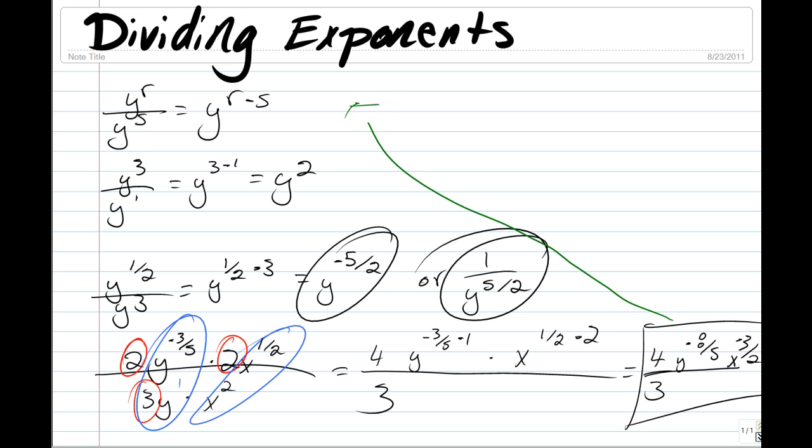However, you could also rewrite this answer as 4 over 3y to the power of 8 over 5, times x to the power of 3 over 2, and that could also be our answer.